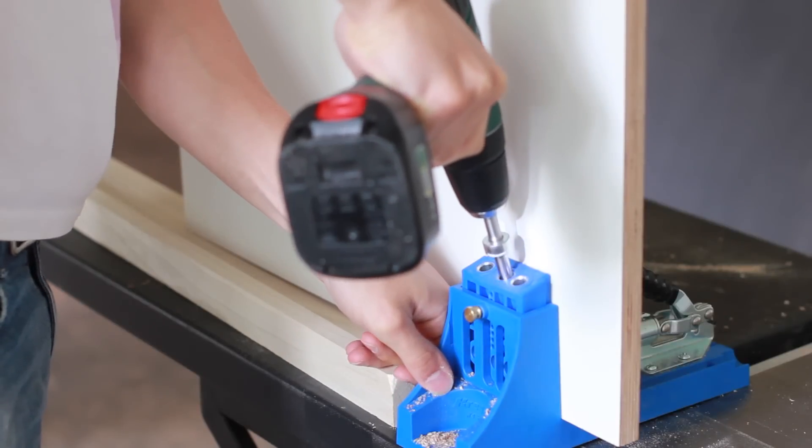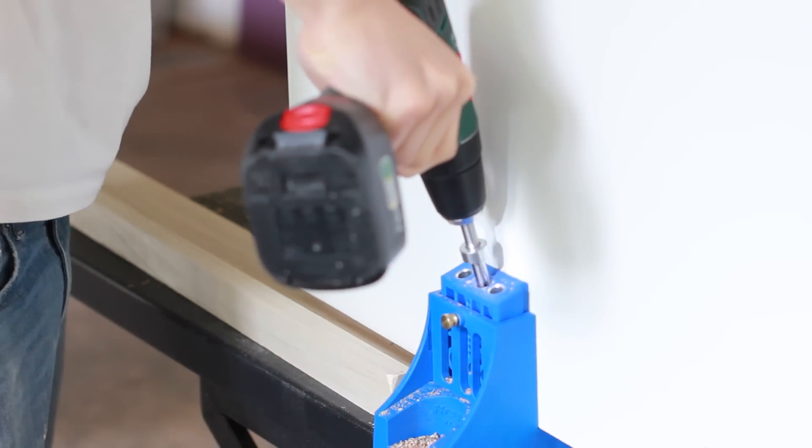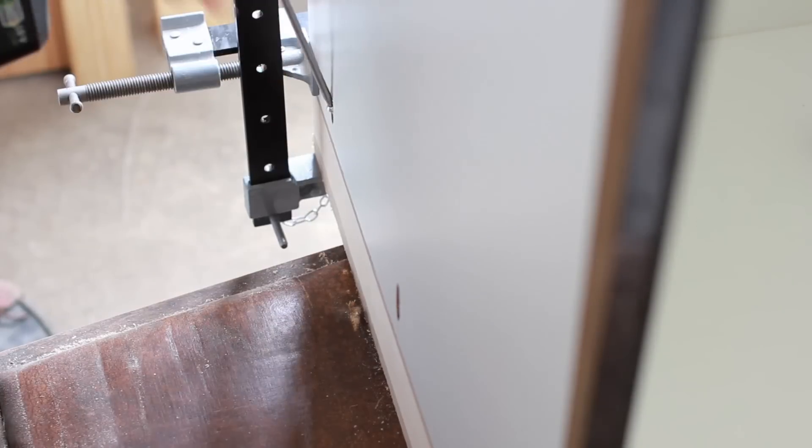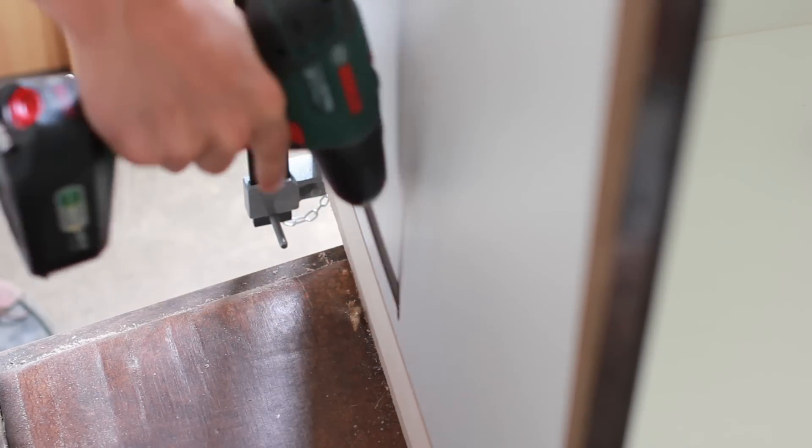To install the outer two panels I couldn't screw them in from below since they sat over top of the edge piece of the torsion box, so I put three pocket screws in each panel. These are on the outside of the unit, so they'll be completely hidden by the trim.